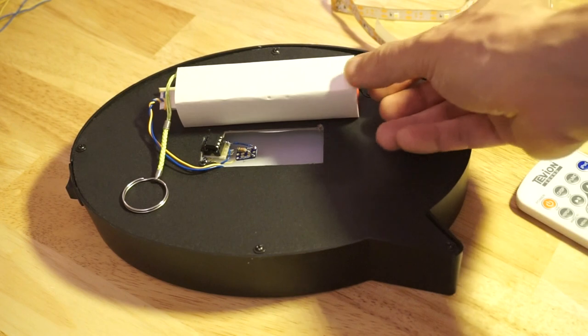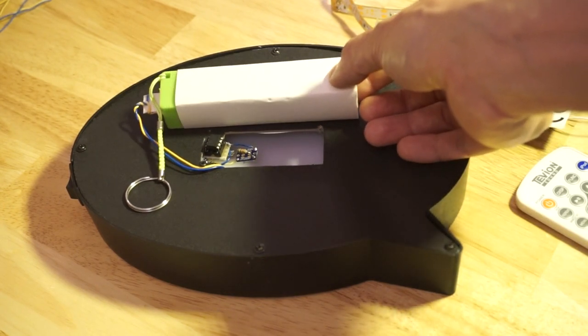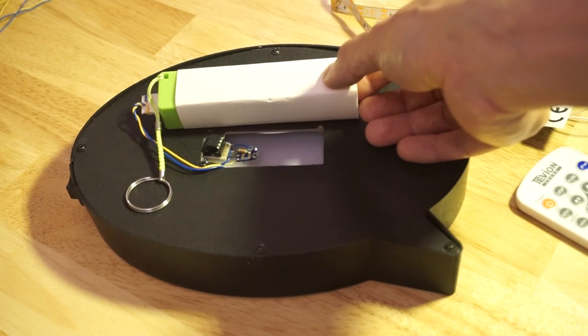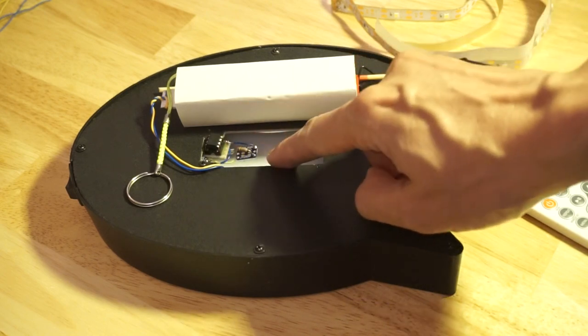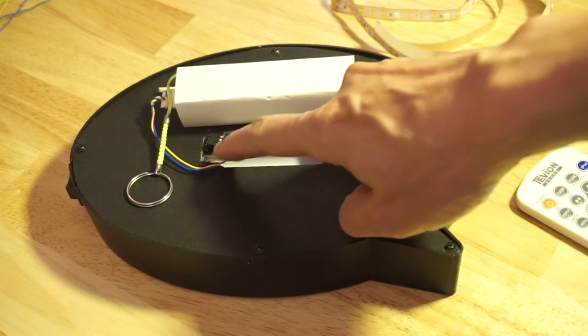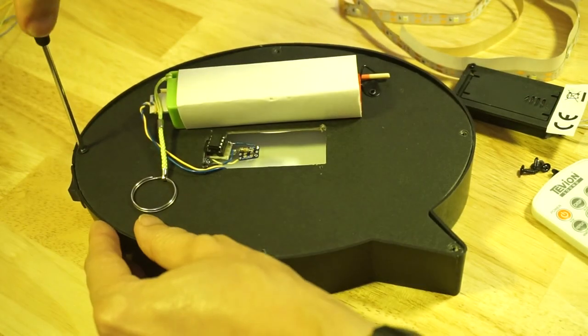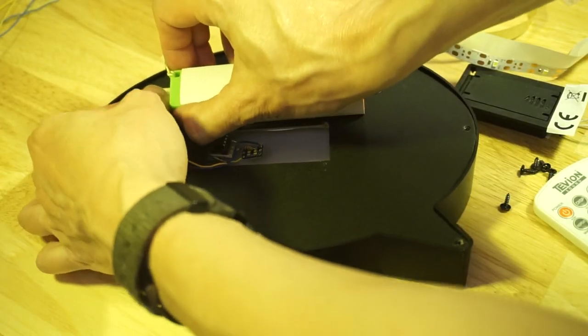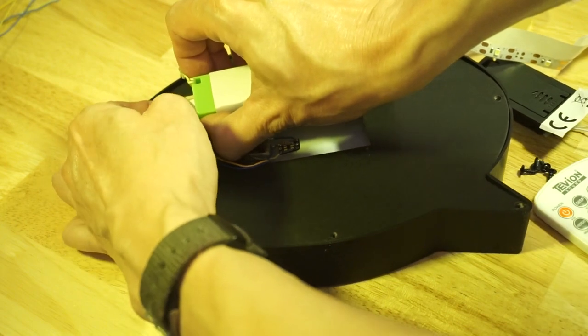So this one is actually now powered by one of those Poundland power banks for charging your phone. There's the ATtiny85, and you can't quite see the IR receiver. I'll have to open it up to show you. Everything is just powered directly from the power bank to remove the USB attachment.